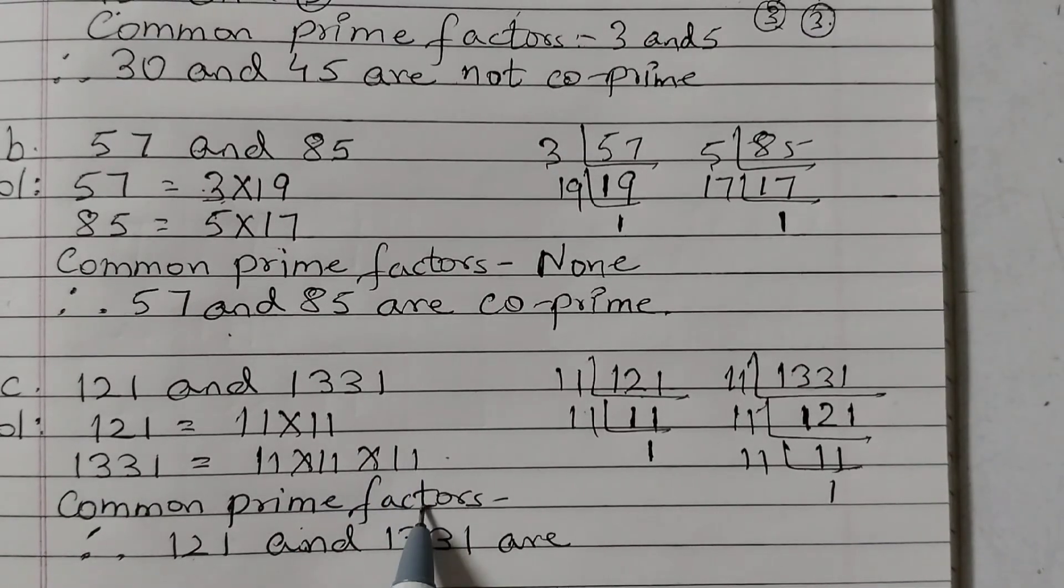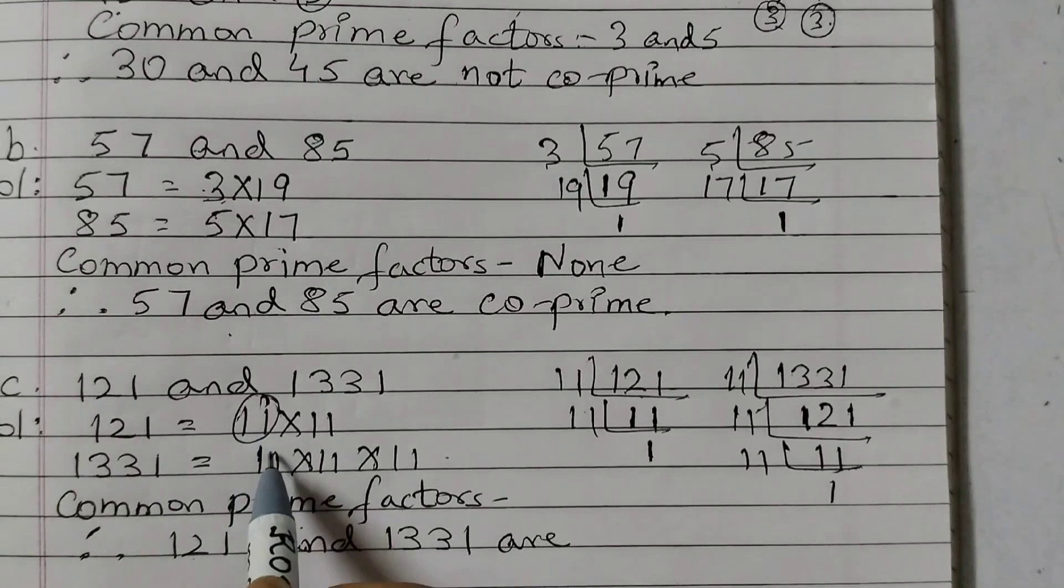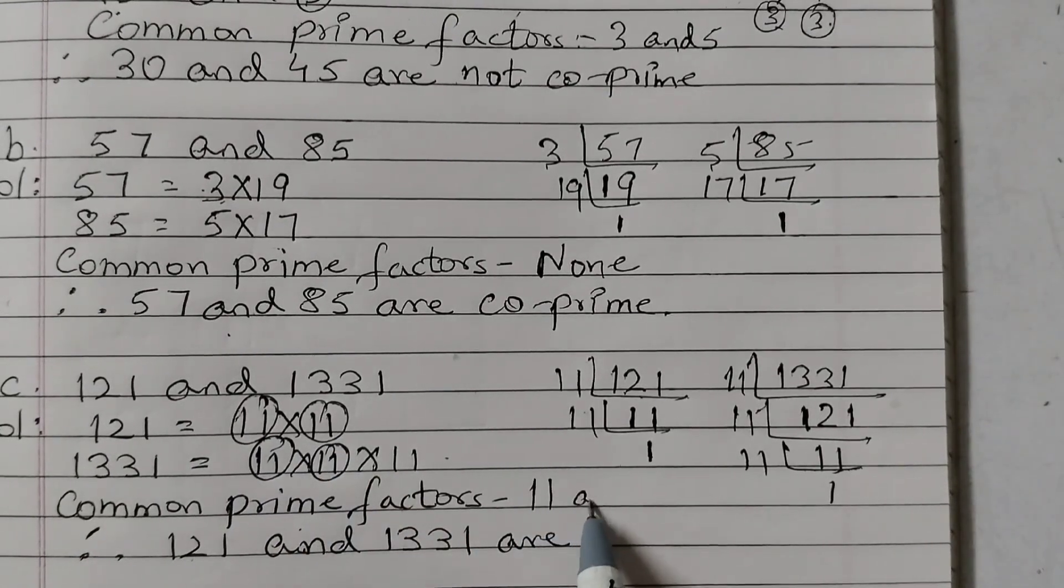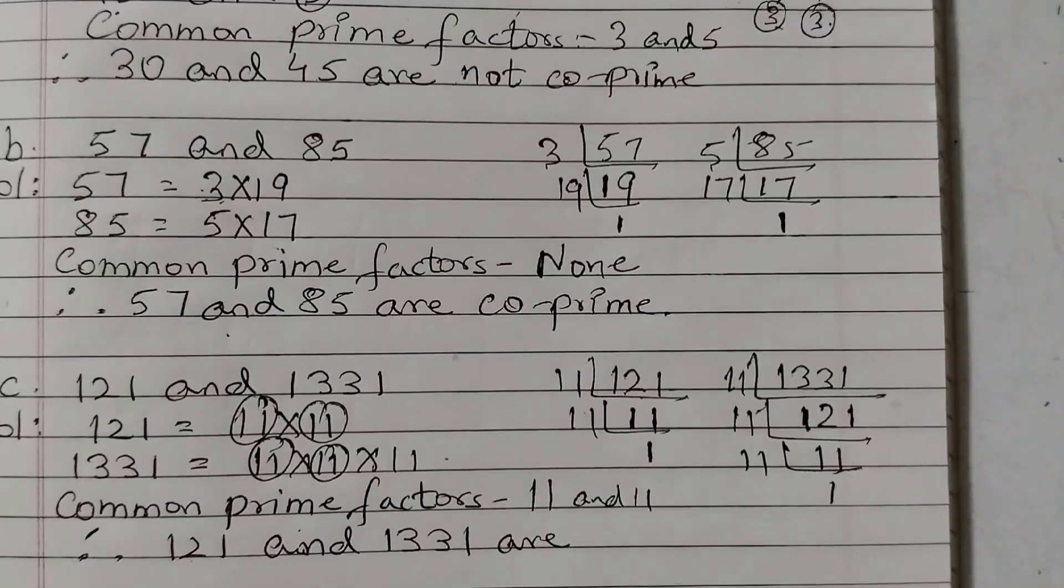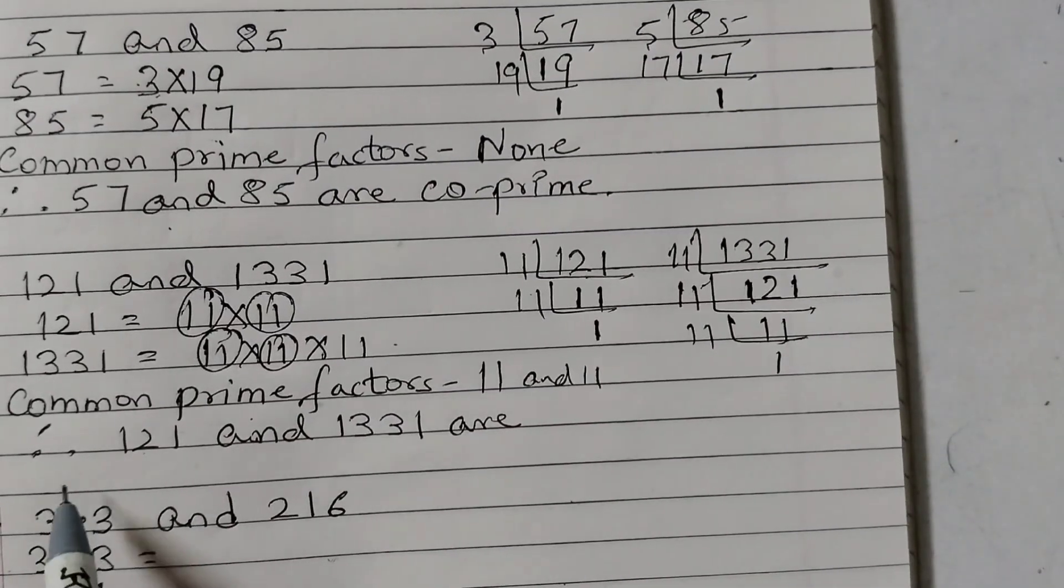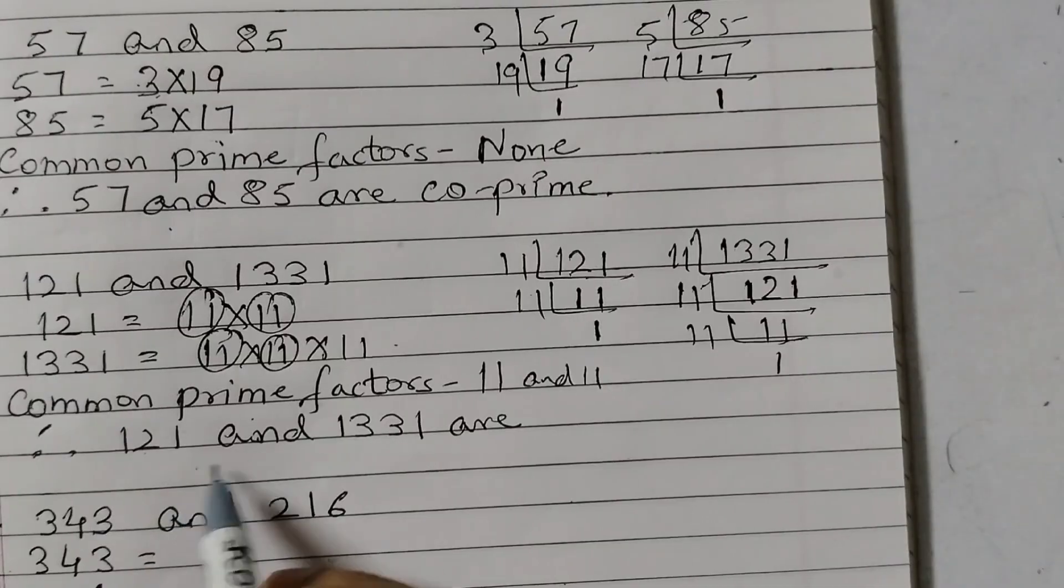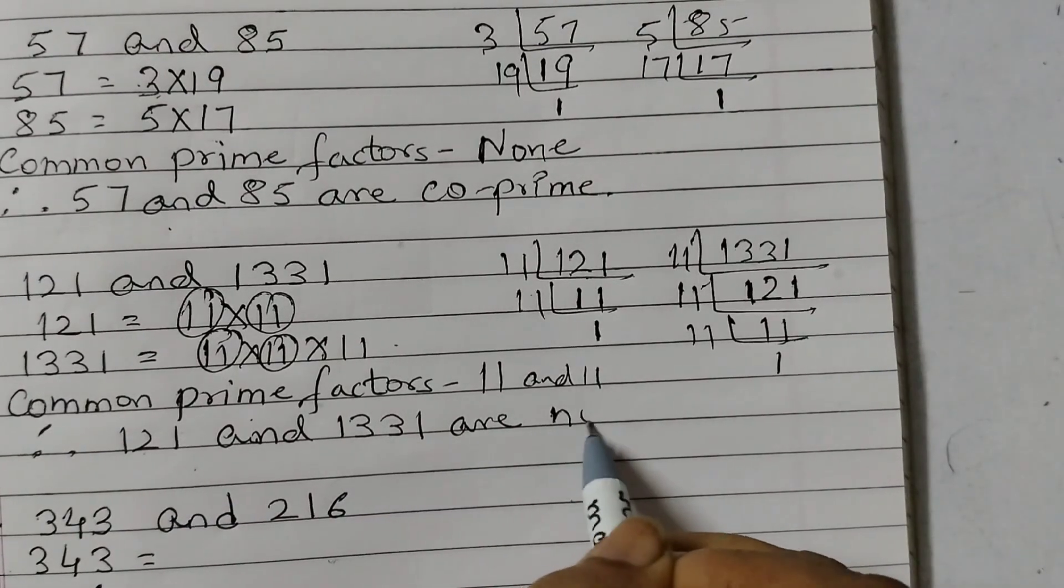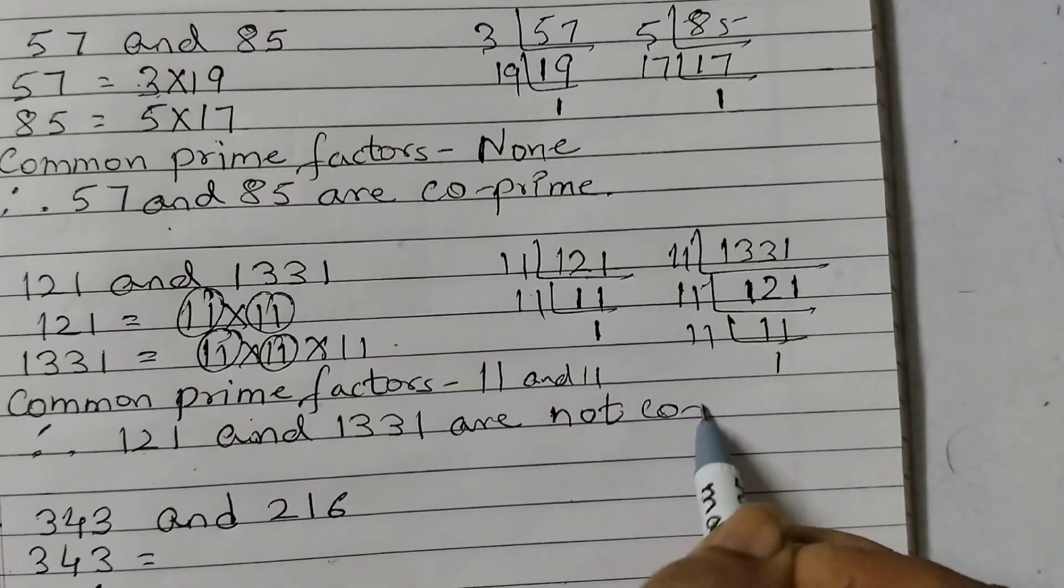Now, common prime factors that would be 11 and then again 11. So 11 and 11 we can write. Or you can just simply write 11 is a common factor. Therefore, 121 and 1331 are not co-prime.